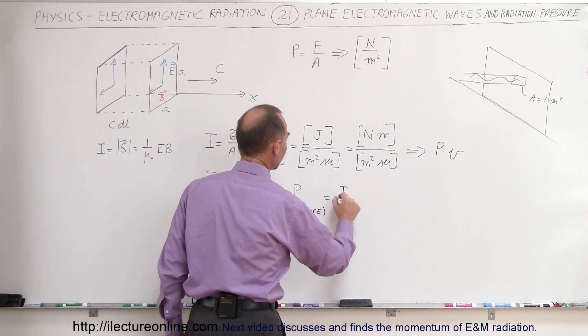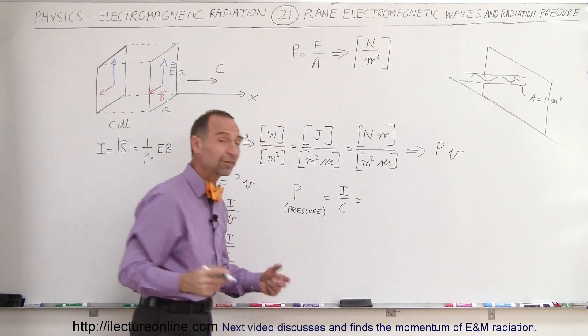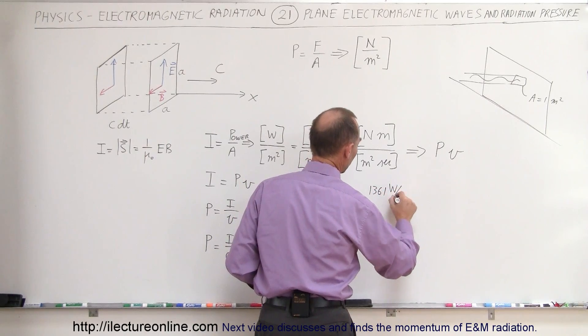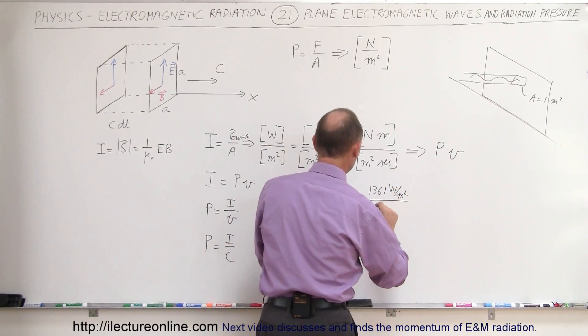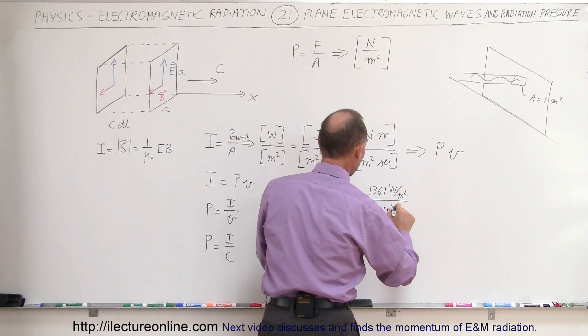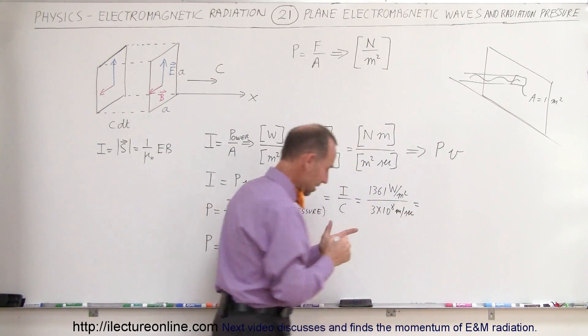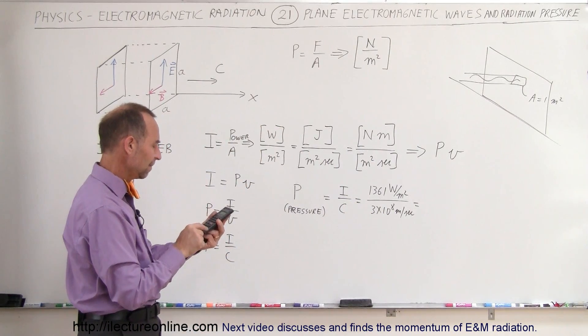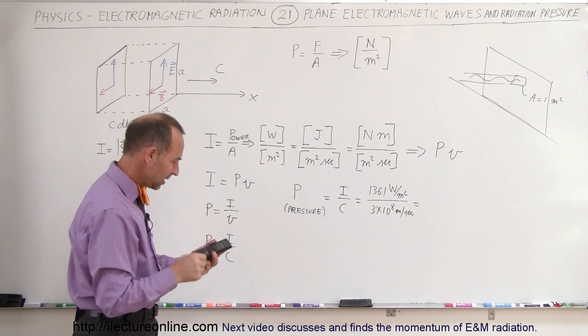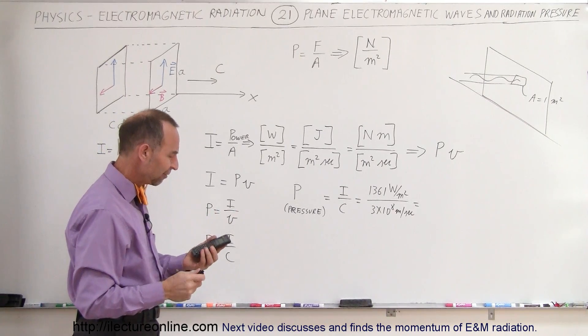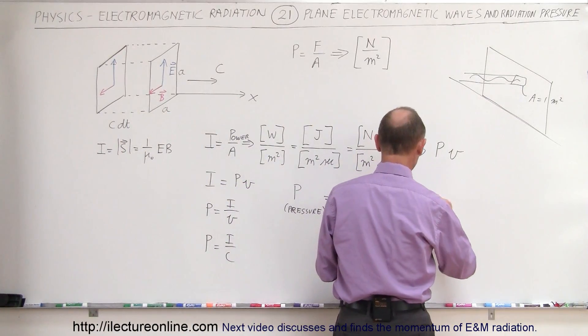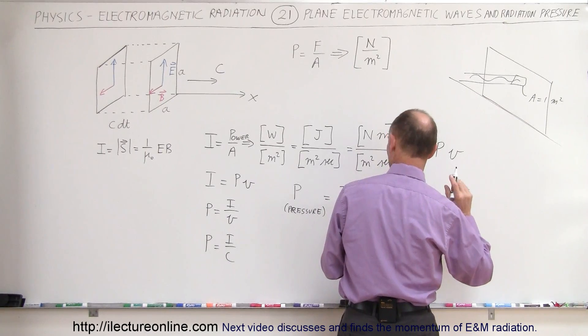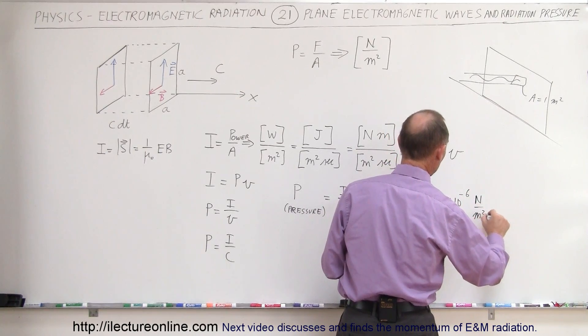Pressure equals the intensity divided by the speed of light. The intensity of sunlight when it reaches the Earth is 1361 watts per square meter divided by the speed of light, which is 3 times 10 to the 8 meters per second. Let's go ahead and calculate that. That's 1361 divided by 3e8. And that gives us 4.54 times 10 to the minus 6. So that would be 4.54 times 10 to the minus 6 newtons per square meter.